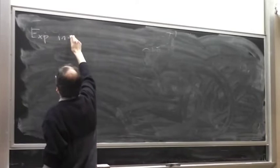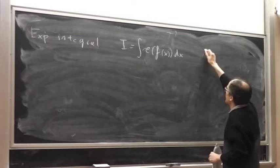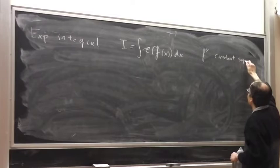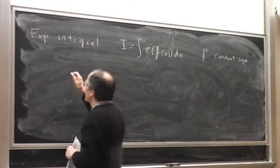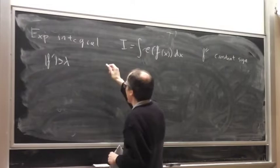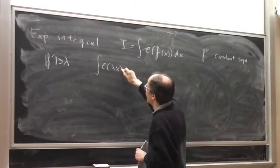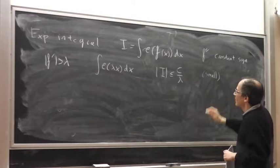Let's say we have an exponential integral of a certain form. To fix ideas, let's say f is convex or concave, meaning f'' has constant sign. It can be proved that if you integrate over an interval, or from minus infinity to infinity, and if f' is large, there is a kind of linear model — meaning you can change this by something with derivative like lambda — and it is possible to prove a bound. This is called the first derivative test.